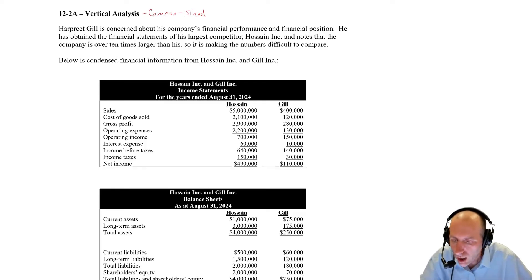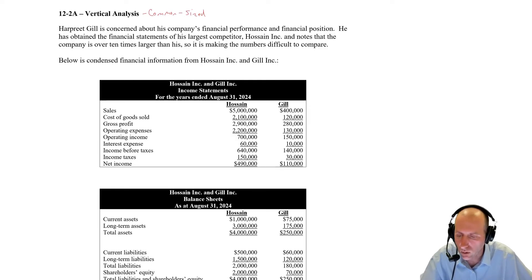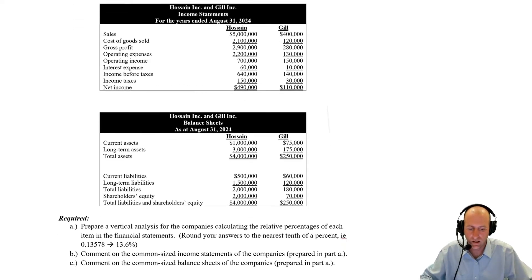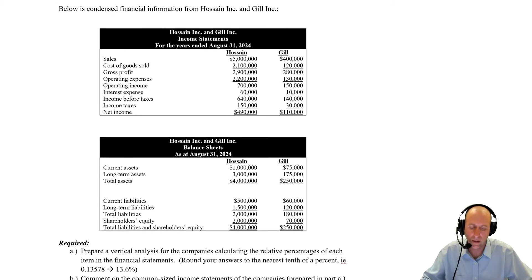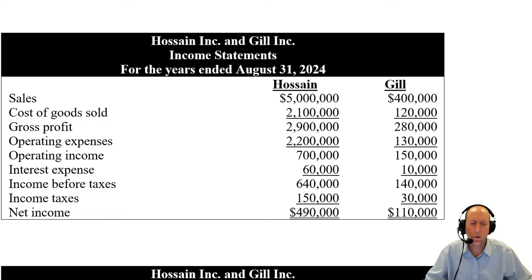Let's read through the problem. Harpreet Gill is concerned about his company's financial performance and financial position. He's obtained the financial statements of his largest competitor, Hossein Inc., and notes that the company is over 10 times larger than his, making the numbers difficult to compare. Below is condensed financial information from Hossein Inc. and Gill Inc. You can see Hossein is a much bigger company — millions more in sales and a bigger balance sheet overall. So let's zoom in on the income statement and do a vertical analysis, as the question calls for.